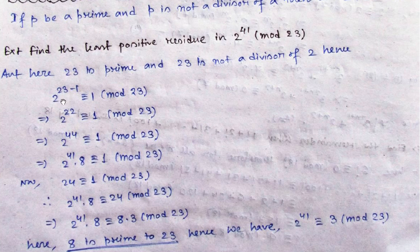So we can apply Fermat's theorem. That will give us: a to the power (p minus 1) congruent to 1 under mod p, which means 2 to the power 22 is congruent to 1 under mod 23.